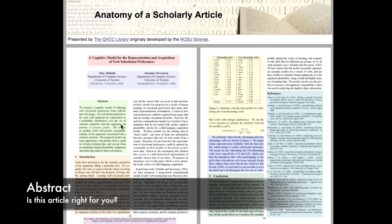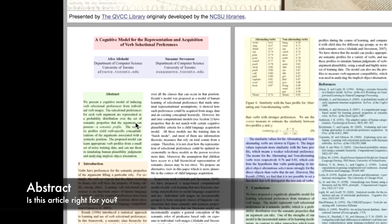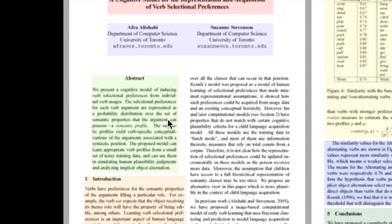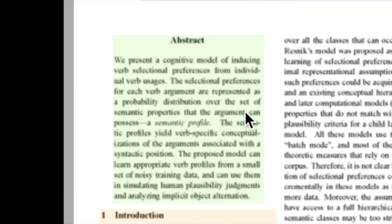Secondly, read the abstract. It will give you a brief summary of the article and the research that led to its publication. By reading the abstract, you may be able to quickly reject any article that's not going to help your research, saving you the time of reading the whole thing.